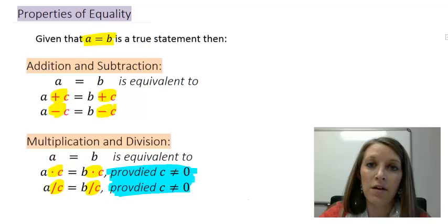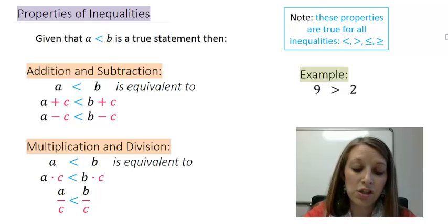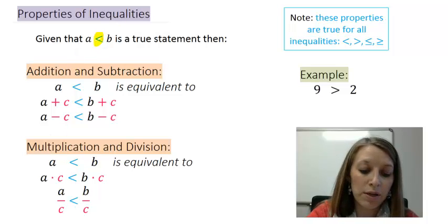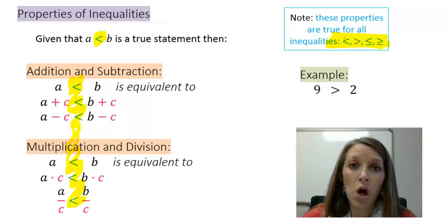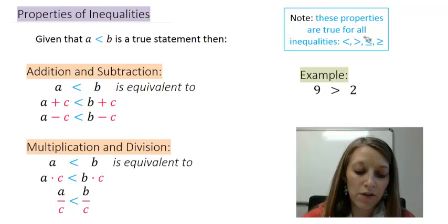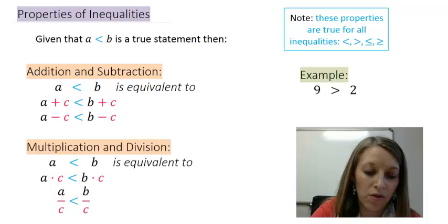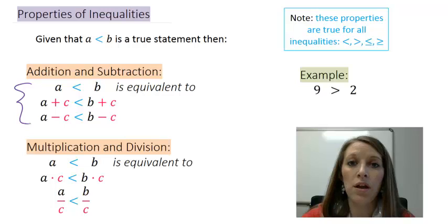Now let's see how we adjust those properties for inequalities. We have four different inequalities, and I just used the less-than symbol in these statements, but note that it can be replaced by any of the other inequality symbols — these statements remain true for all four inequalities. The addition and subtraction principle says we can add or subtract something from both sides of our inequality and it remains a true statement. That is exactly the same as with equations.